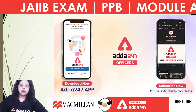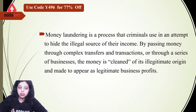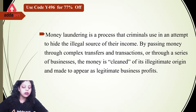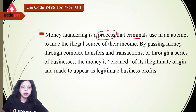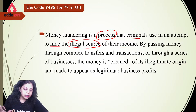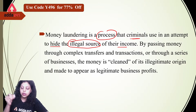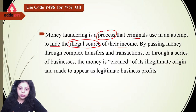We were discussing money laundering and we discussed the basic introduction in the last class, which simply means converting black money into white money. Or we can define money laundering as a process that criminals use in an attempt to hide the illegal source of their income. The process by which criminals individually try to hide their illegal money or illegal source of income from the eyes of the government and anti-money laundering officers.